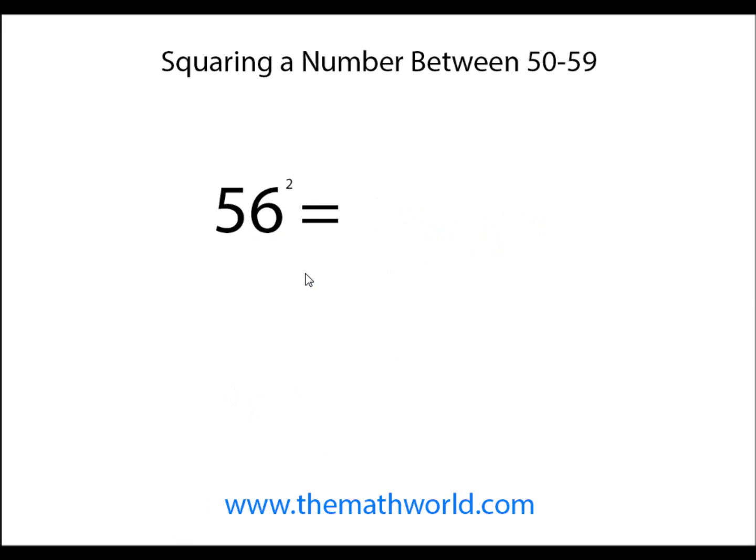Next example is 56 squared. We take the ones digit and square it. 6 times 6 is 36. We do 25 plus the ones digit, which is 6. 25 plus 6 is 31. So 56 squared is 3,136.